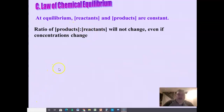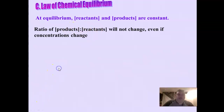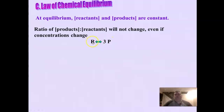To understand how this works, we're going to take a look at a little fake reaction: R is in equilibrium with 3P — reactants and products. There's going to be one reactant for every three products. And what we're going to do is start adding reactants and watching how the equilibrium shifts.